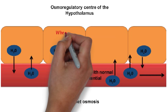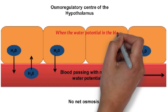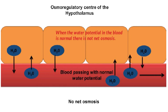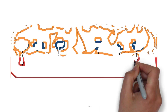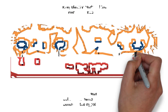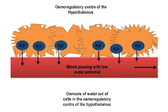ADH is produced by the hypothalamus but is stored and released by the pituitary gland. It is thought that as blood with a low water potential passes by the cells of the osmoregulatory center, water moves out of the cells into the blood, causing these cells to shrink. This is what causes a signal to be passed to the pituitary gland.